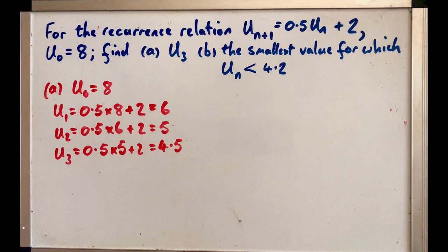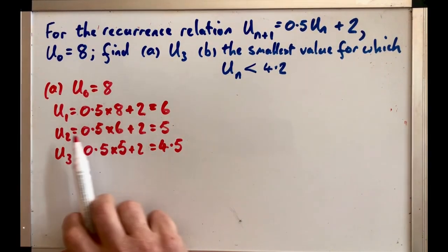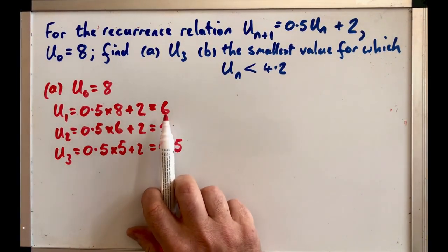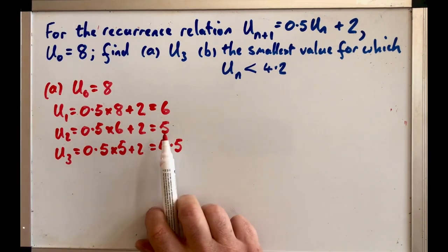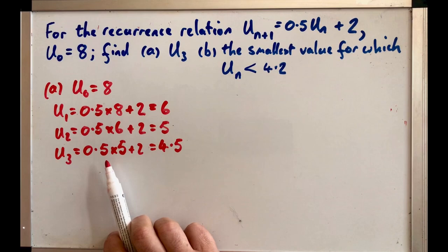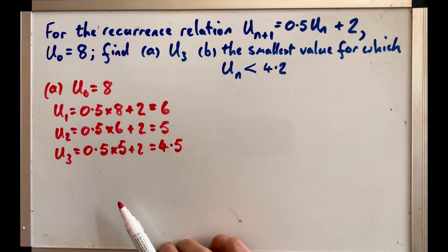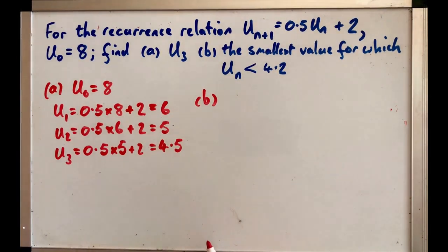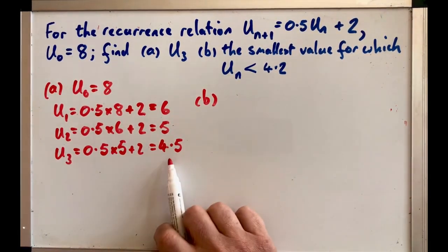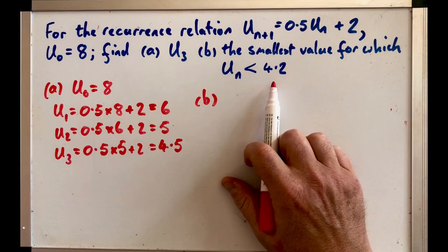So we've just, it's an iterative process. We put the answer from there back into the equation again to get the next term and then the answer from that back into this equation to get the next term and so on for as long as we need to. Now for B we're just going to have to continue this process. Remember we want this to be less than 4.2.